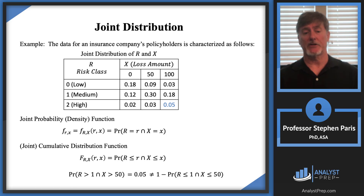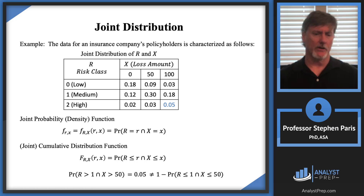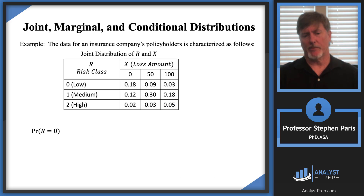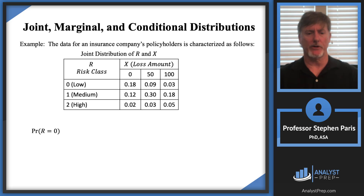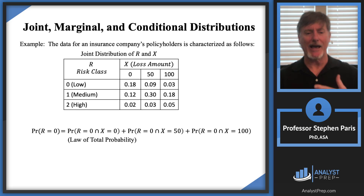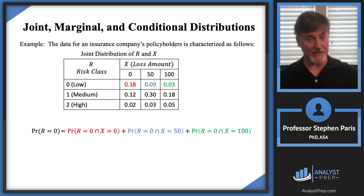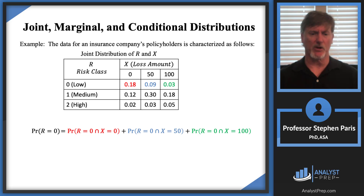The density and distribution functions are standard ways of defining a joint distribution in the discrete framework. Now I could look at a probability like: what's the probability that cap R equals zero? If cap R equals zero, the loss amount could be 0, 50, or 100, so by the law of total probability I need to add those three values. Adding them up gives 0.3, so there's a 30% chance of selecting a low-risk policyholder.